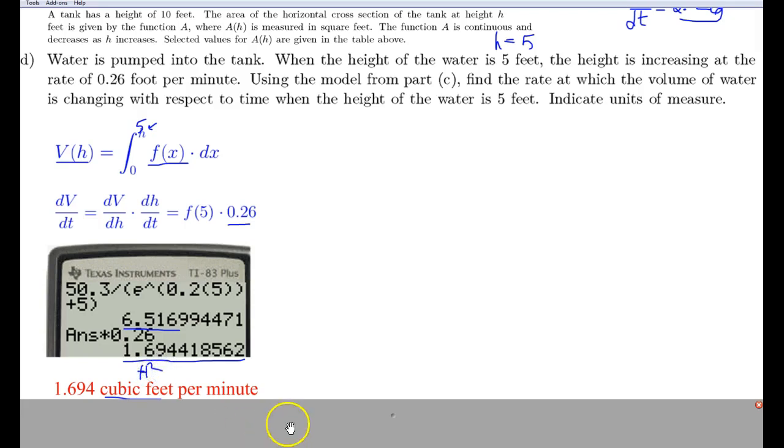And the way the point breaks down here is this definition of dV dt, that's worth two points on this problem. And then the actual answer, 1.694, is worth another point. And it says indicate units and measures. So if you leave the units off, I suspect you wouldn't get the point.